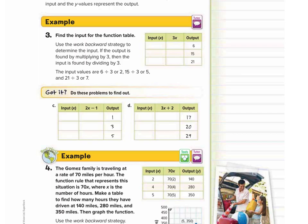Now we're on workbook page 581, and we're going to do problems C and D. Notice for problem C, this one's different because we have our outputs and our function rule, but we don't have the inputs. So for this one, we need to work backwards by doing inverse operations. We're going to take our function rule, set it equal to each output, and use inverse operations to find the input.